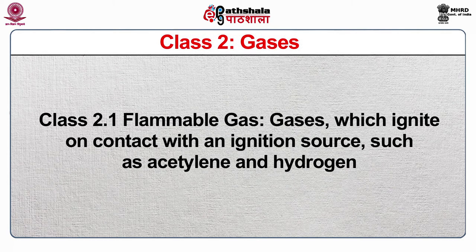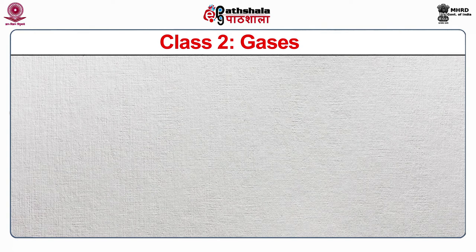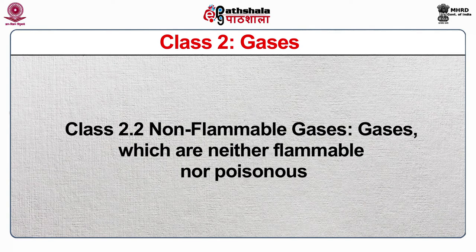Class 2 dangerous substances include gases. Division 1 includes flammable gases — gases which ignite on contact with an ignition source, such as acetylene and hydrogen. Division 2 of Class 2 substances are non-flammable gases — gases which are neither flammable nor poisonous. Division 3 of Class 2 substances are poisonous gases — gases liable to cause death or serious injury to humans if inhaled, for example hydrogen cyanide.